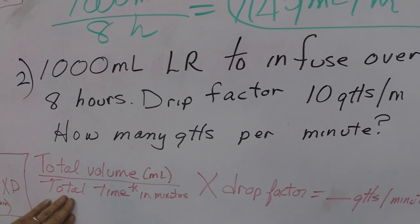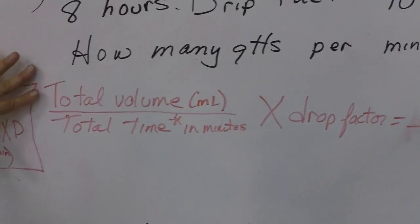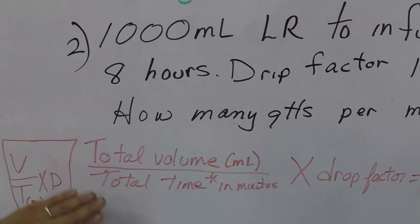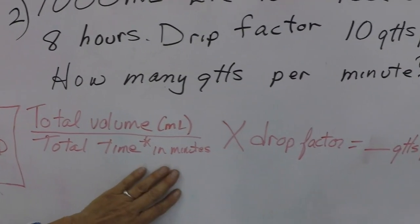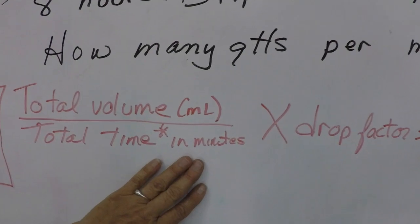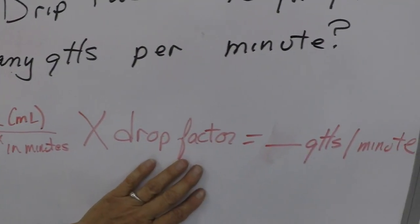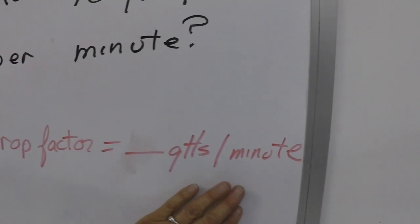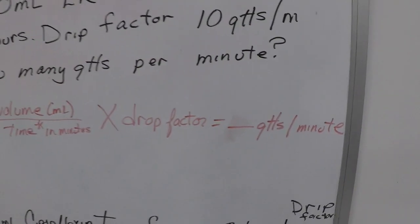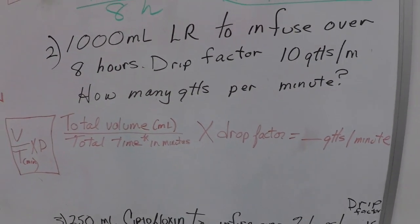Here's our equation. So to do this we have our total volume, our time in minutes, not in hours, our time in minutes times our drip factor equals drops per minute. So let's set our numbers in there.